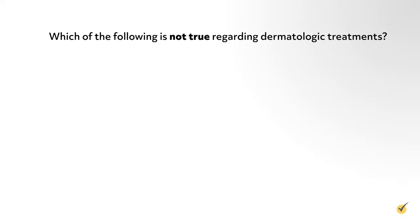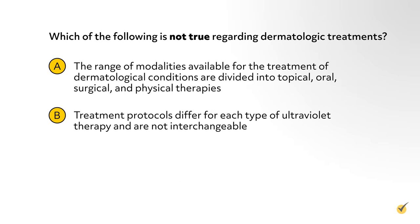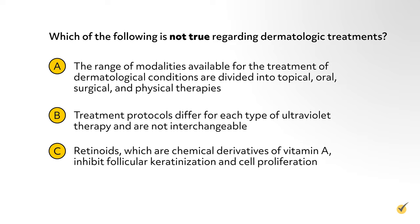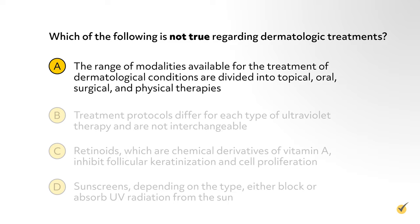Question 1: Which of the following is not true regarding dermatologic treatments? A. The range of modalities available for the treatment of dermatological conditions are divided into topical, oral, surgical, and physical therapies. B. Treatment protocols differ for each type of ultraviolet therapy and are not interchangeable. C. Retinoids, which are chemical derivatives of vitamin A, inhibit follicular keratinization and cell proliferation. D. Sunscreens, depending on the type, either block or absorb UV radiation from the sun. If you chose A, you are correct. Treatment of dermatological conditions are divided into systemic, topical, physical modalities, and surgical therapies.